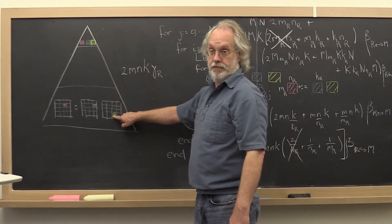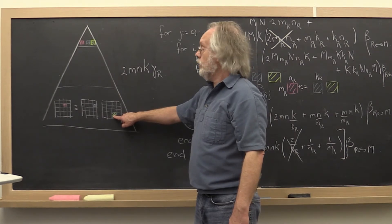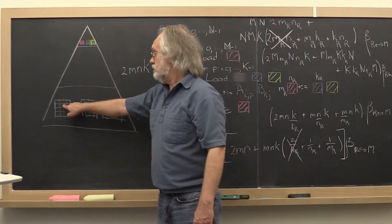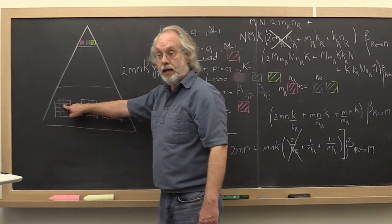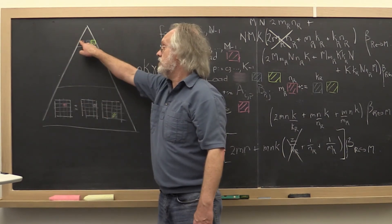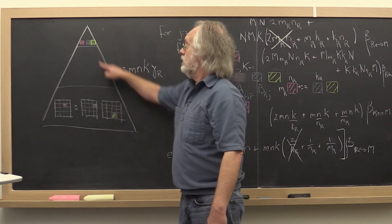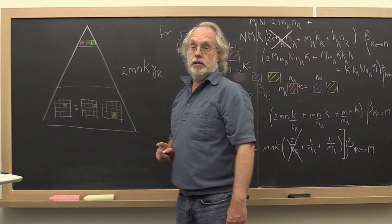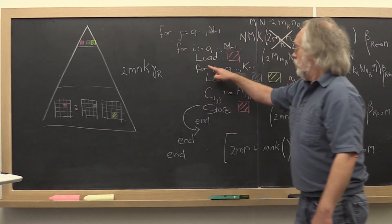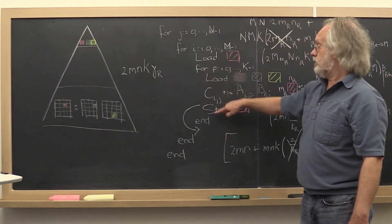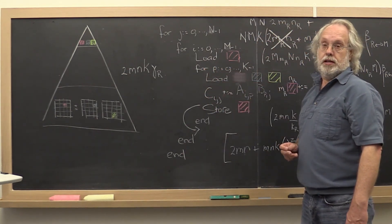But you can only do that with one of them. And notice that it's advantageous to pick C. Why? Because C has to be loaded and stored, while blocks of A and B only need to be loaded. And that's why we made the P loop the innermost loop in this algorithm right here.